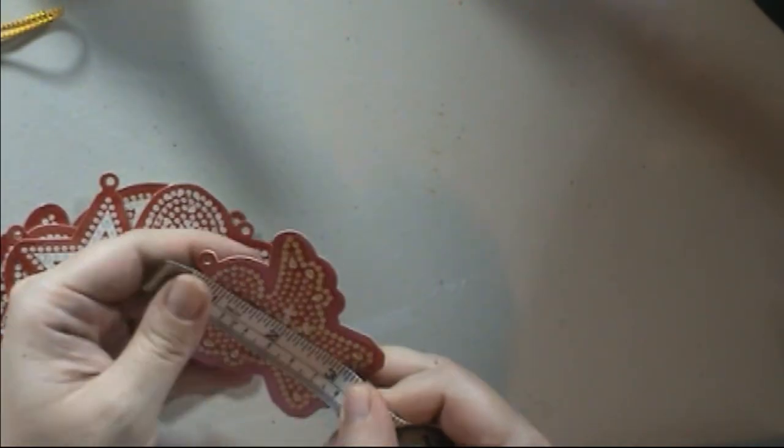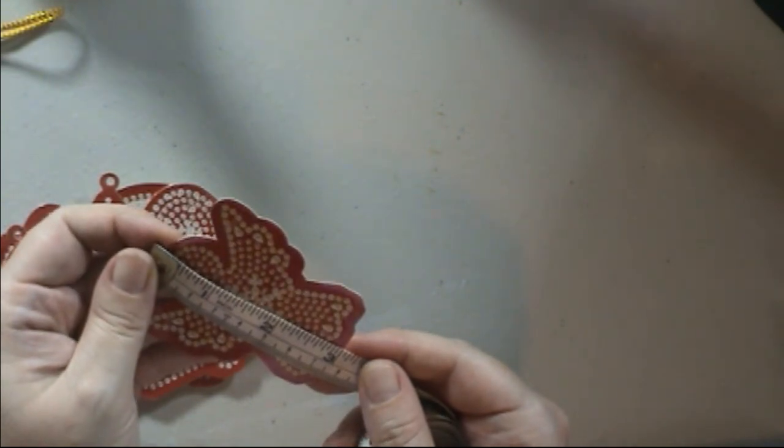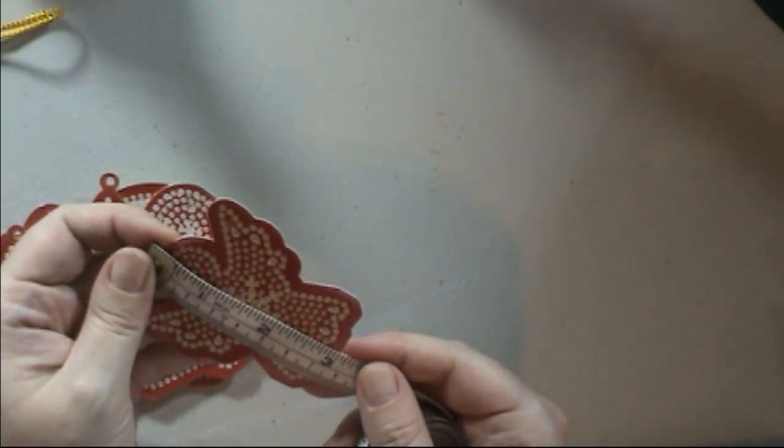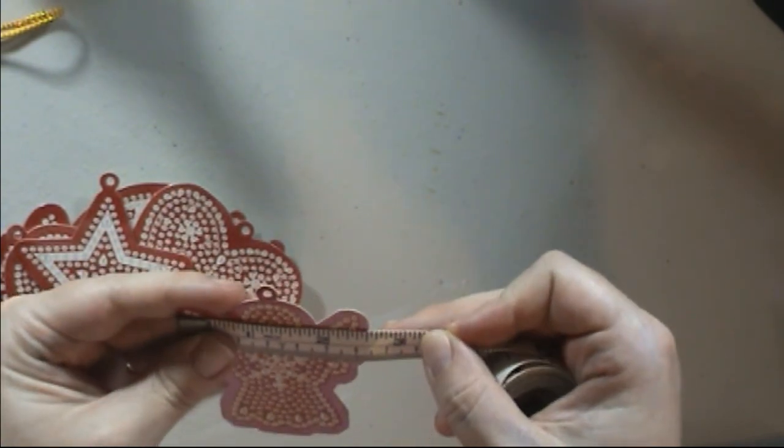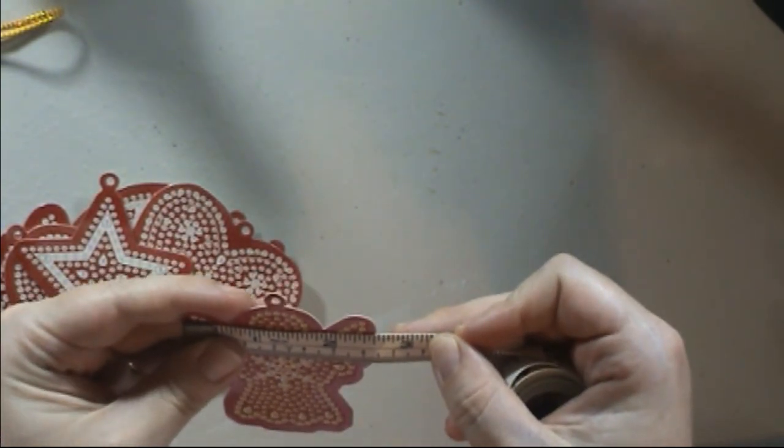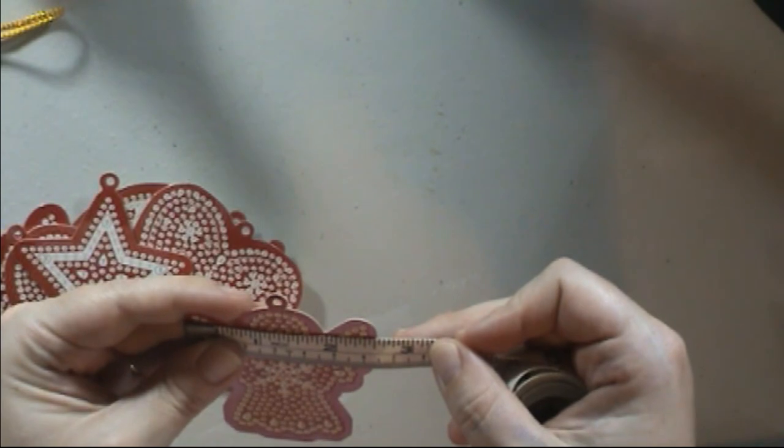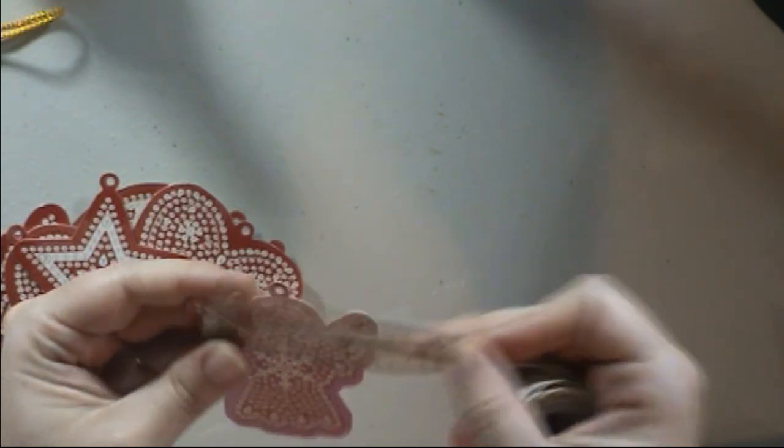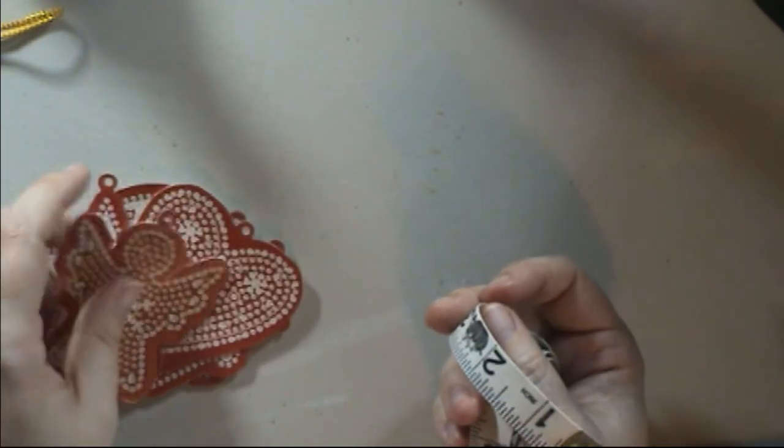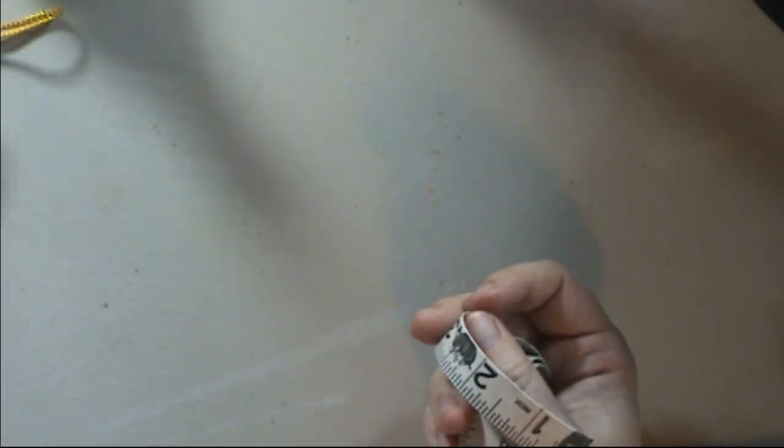So these are roughly about three inches tall, so seven and a half centimeters. And at the widest point, this one is two and a half inches or six and a half centimeters. So they're all not too big, but they're Christmas ornaments. They shouldn't be too big. And with them being cardstock, they're going to be really light.